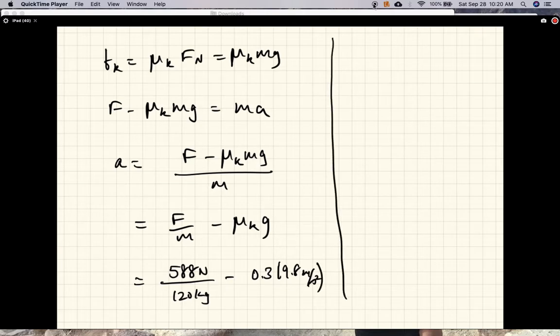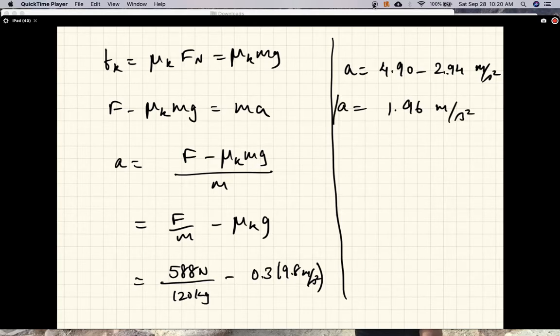So that is the acceleration of the block. 4.9 minus 2.94 meters per second squared, that is 1.96 meters per second squared. So that is the acceleration of the block once it starts sliding.